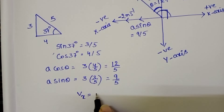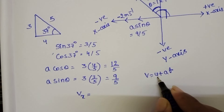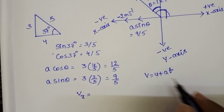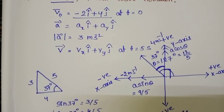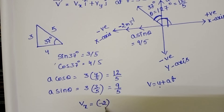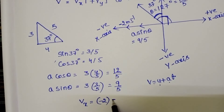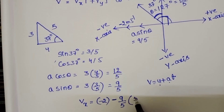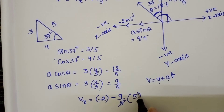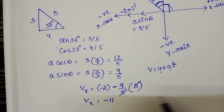To find the final velocity along the x direction, we use v equals u plus at, so vx equals ux plus ax times t. The initial velocity along x is minus 2, and acceleration along x is negative, so vx equals minus 2 minus (9/5) times 5. The 5s cancel, giving vx equals minus 2 minus 9, so vx equals minus 11 meter per second.